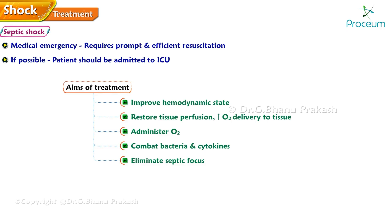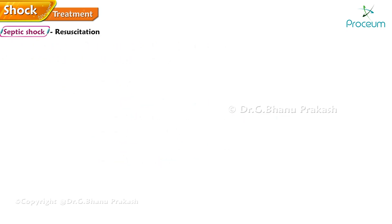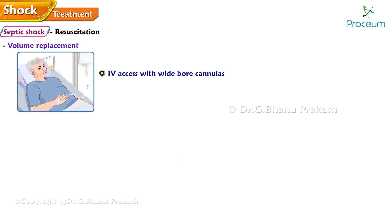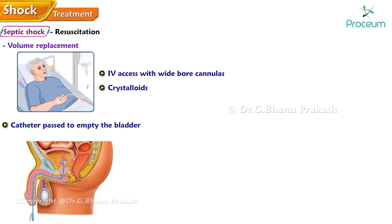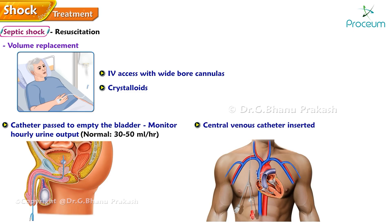Eliminate the septic focus. For resuscitation and volume replacement, intravenous access with wide-bore cannulas is established and crystalloid should be given. A urethral catheter is passed to empty the bladder and to monitor hourly urine output — normal urine output is 30 to 50 milliliters per hour. A central venous catheter is inserted; normovolemia will read from 10 to 15 centimeters H2O.